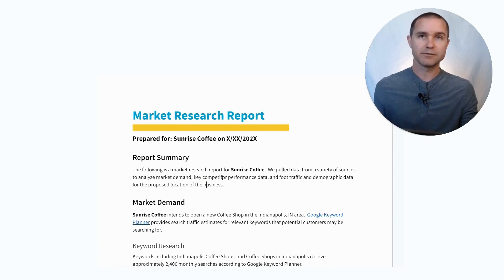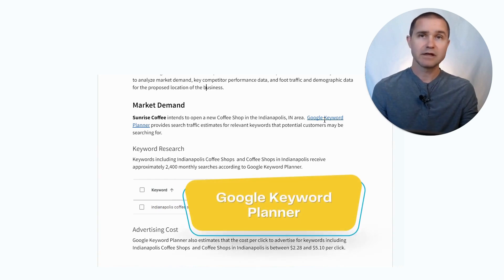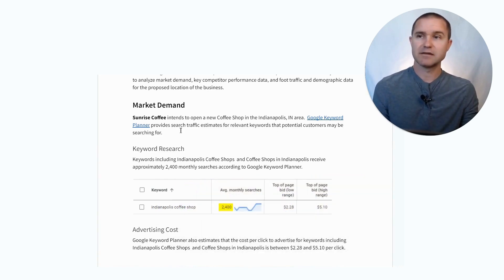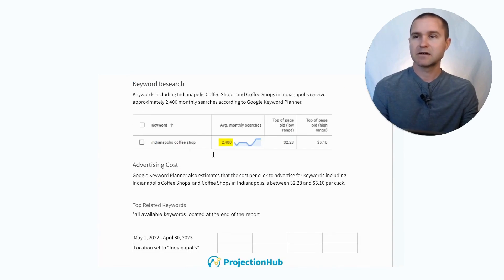I'm happy to show you how that works in this video, along with a number of free tools as well. We've got Sunrise Coffee here, which we're going to open up in the Indianapolis area. The first thing we want to do is use the free Google Keyword Planner tool, which will help us estimate the search traffic for relevant keywords. We're going to look up 'Indianapolis coffee shops' or 'coffee shops in Indianapolis' — Google Keyword Planner says they're getting 2,400 monthly searches for those and related keywords.